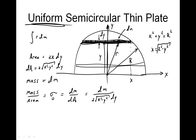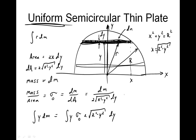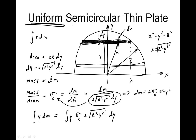So the neat thing about this is that the integral of y dm — because I'm only caring about the y position of the center of mass — is equal to the integral of y times sigma-nought times 2√(r² − y²) dy. In other words, I bring the denominator over, so I get dm equals 2 sigma-nought √(r² − y²) dy. So dm has now been written in terms of dy, and we know how to integrate in terms of the y position.